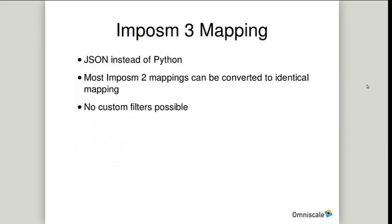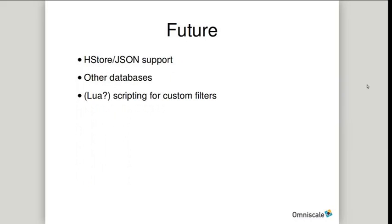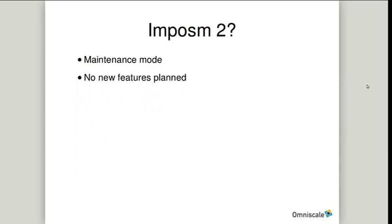The current status of Impossum 3: we've been using it in production for more than nine months, and with diff support for about three months. We might make some smaller changes to the mapping, and we still have no documentation — that's basically the only blocker for an official 3.0 release. In the future we might add H-store support, possibly support other databases, and we might support scripting of custom filters, maybe with Lua. Impossum 2 is now in maintenance mode.